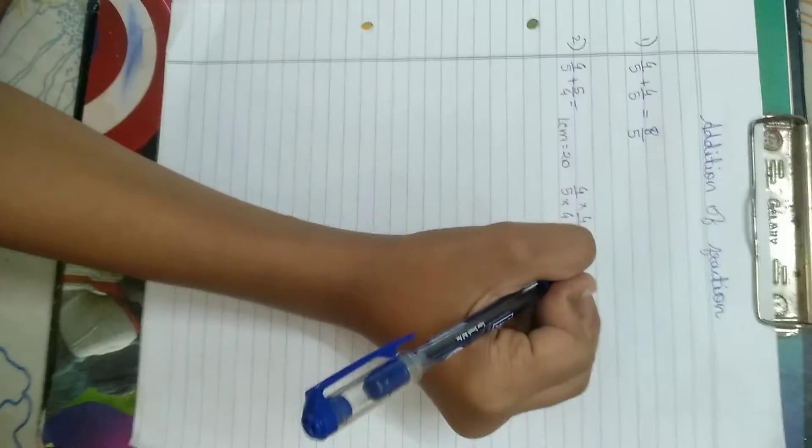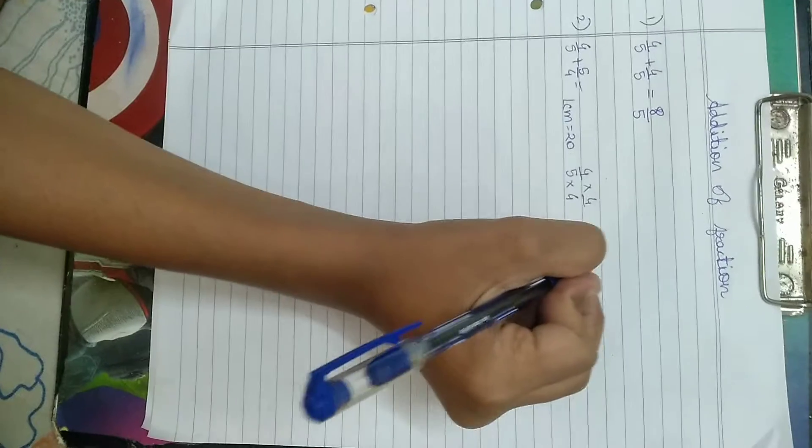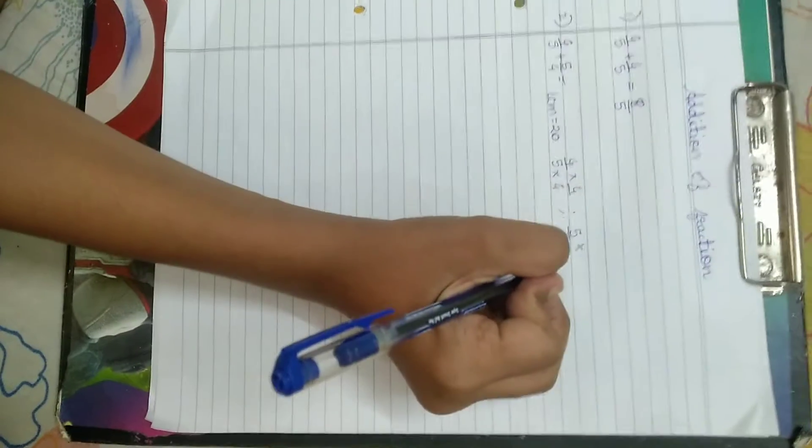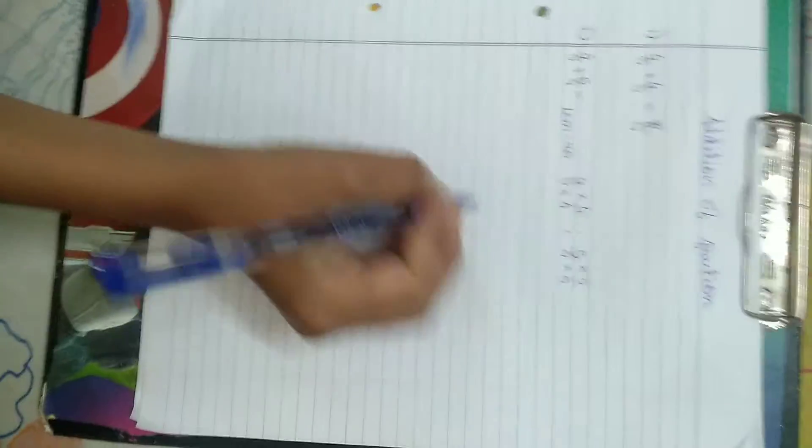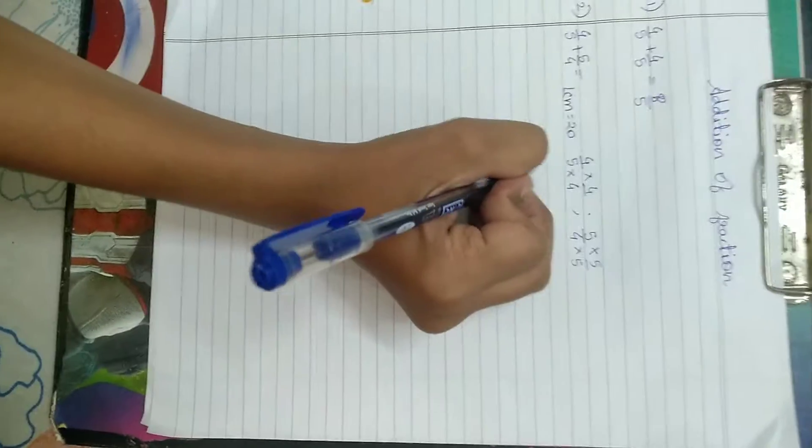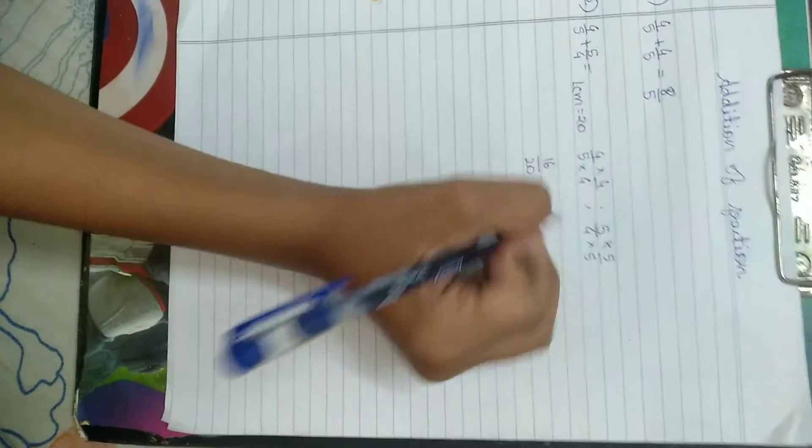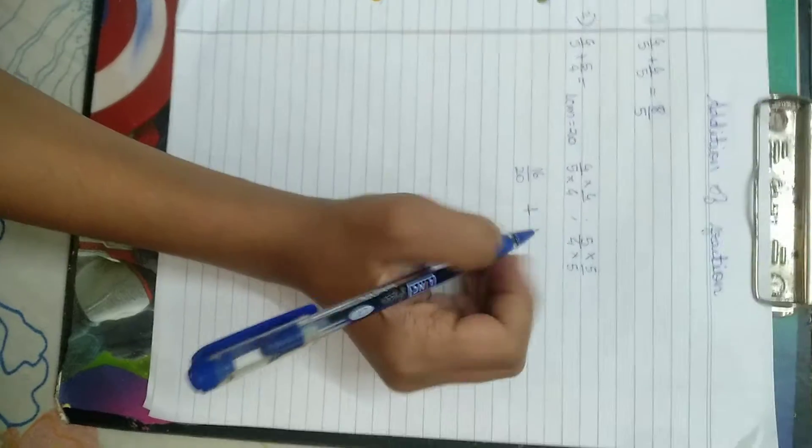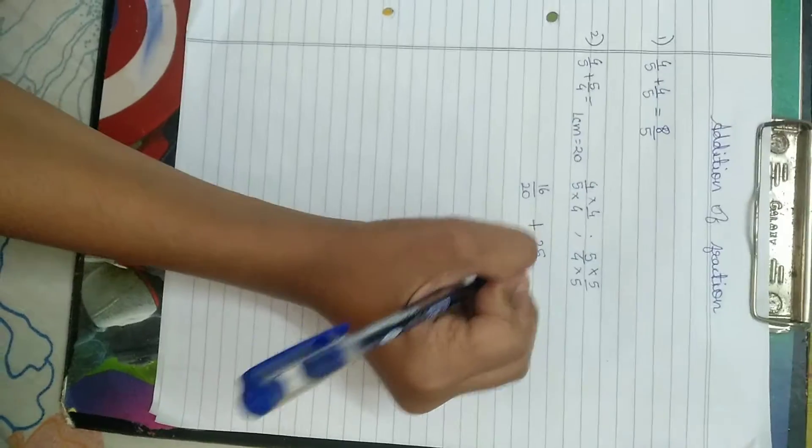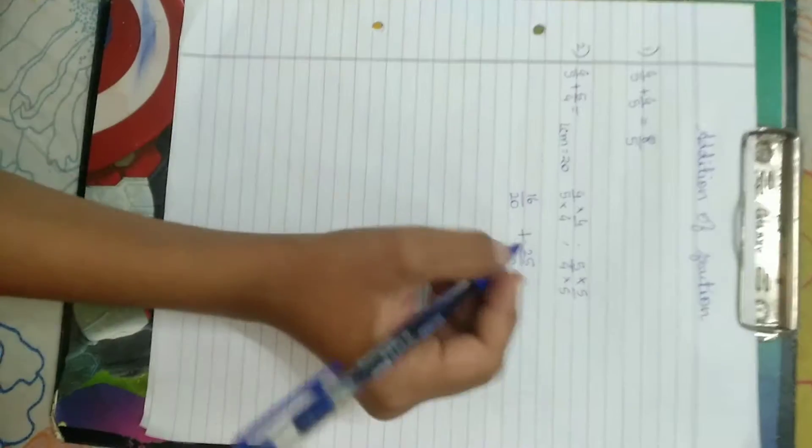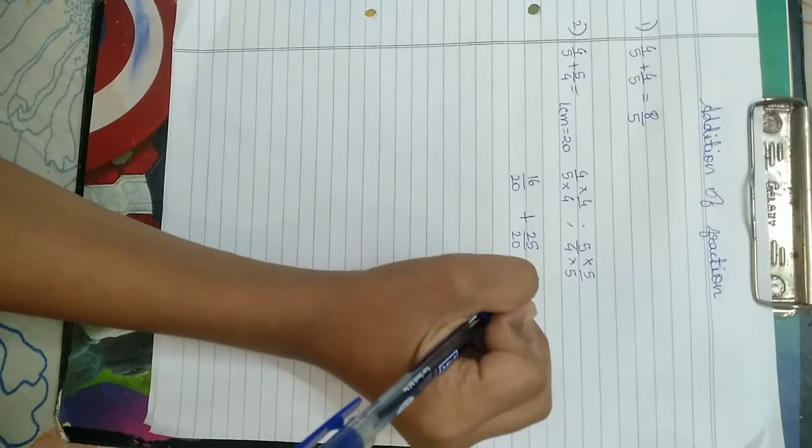Now 5 by 4. Now 4 times what equals 20? 5. So we will multiply this by 5 by 5. Now 4 times 4 is 16, 16 by 20 plus 5 times 5, 25. Now 20. So now we will add this. The answer would be 41 by 20.